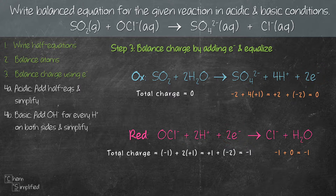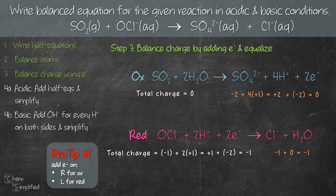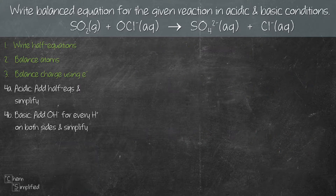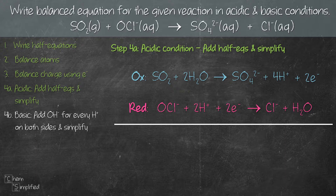Here's a tip to help remember where to add the electrons: if it's an oxidation equation, add the electrons on the right hand side; if it's a reduction equation, add the electrons on the left hand side. If you find the electrons on the wrong side of the equation, that means something is wrong — stop and check. Now let's add both equations to give us the balanced equation in acidic condition.